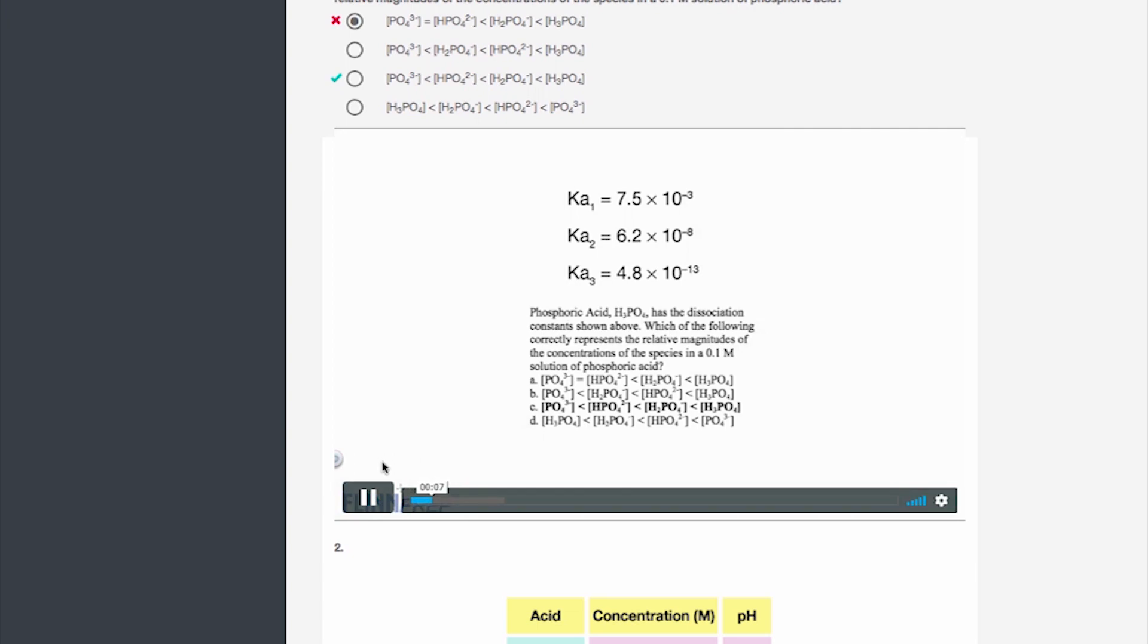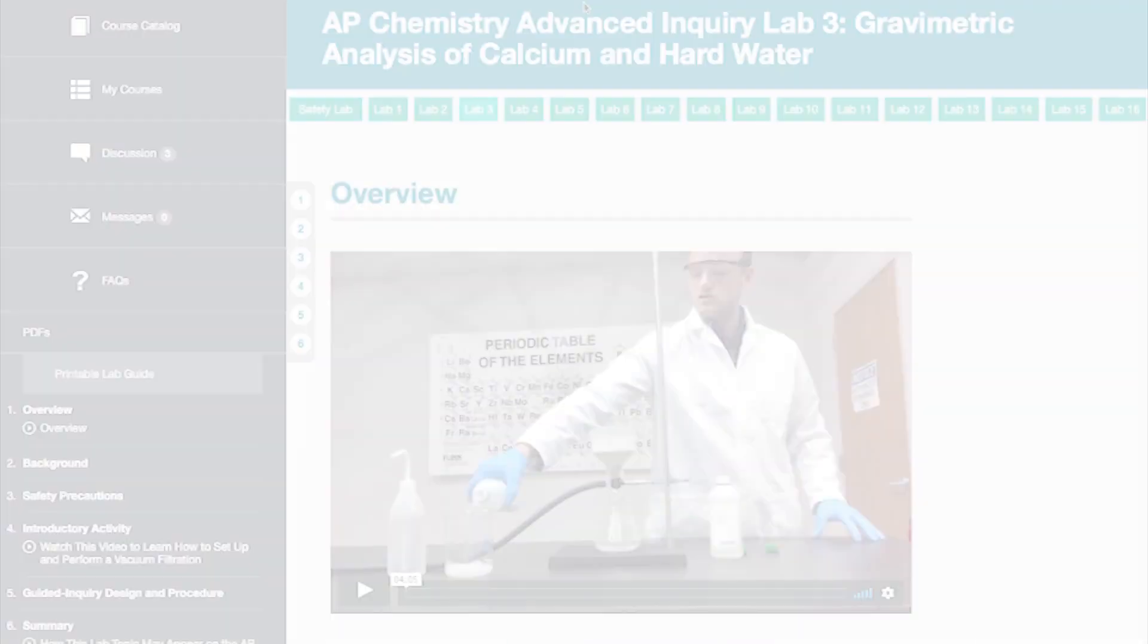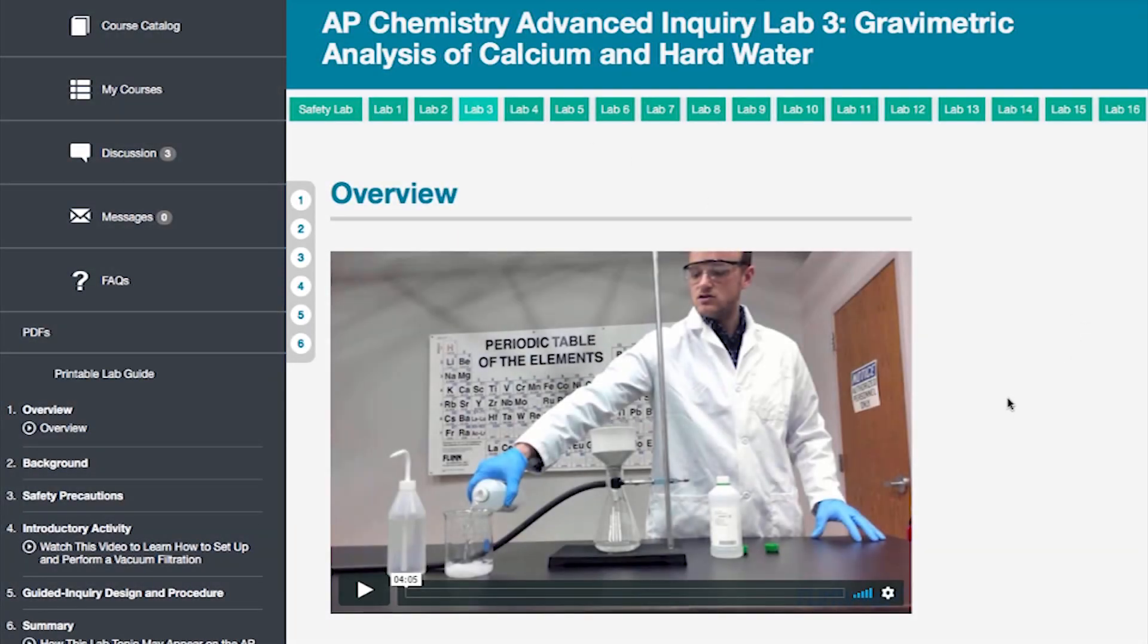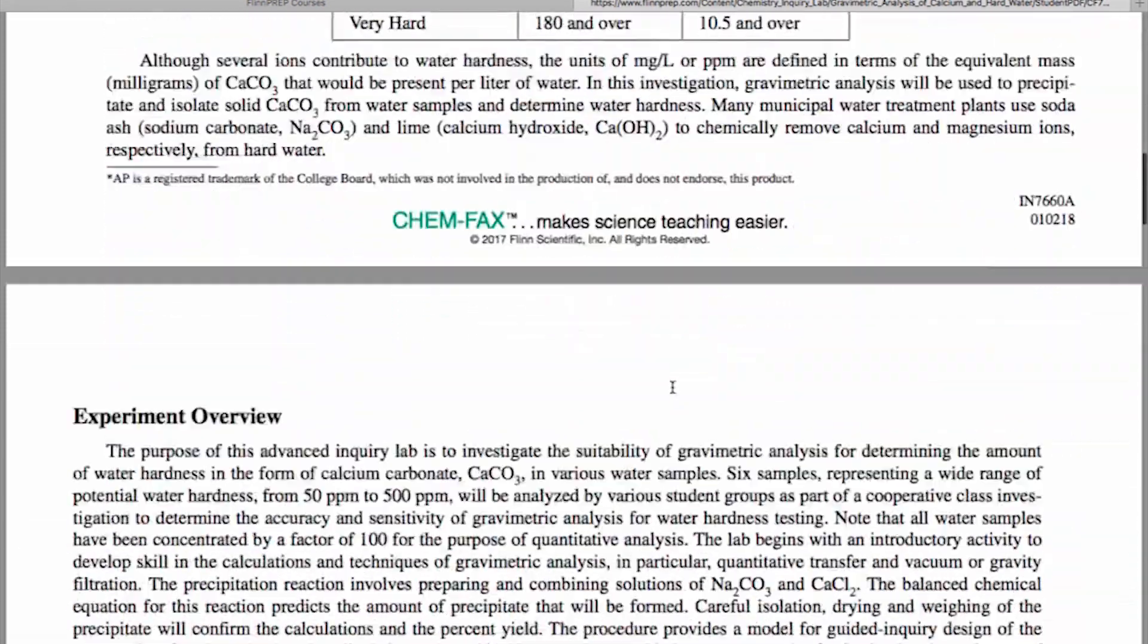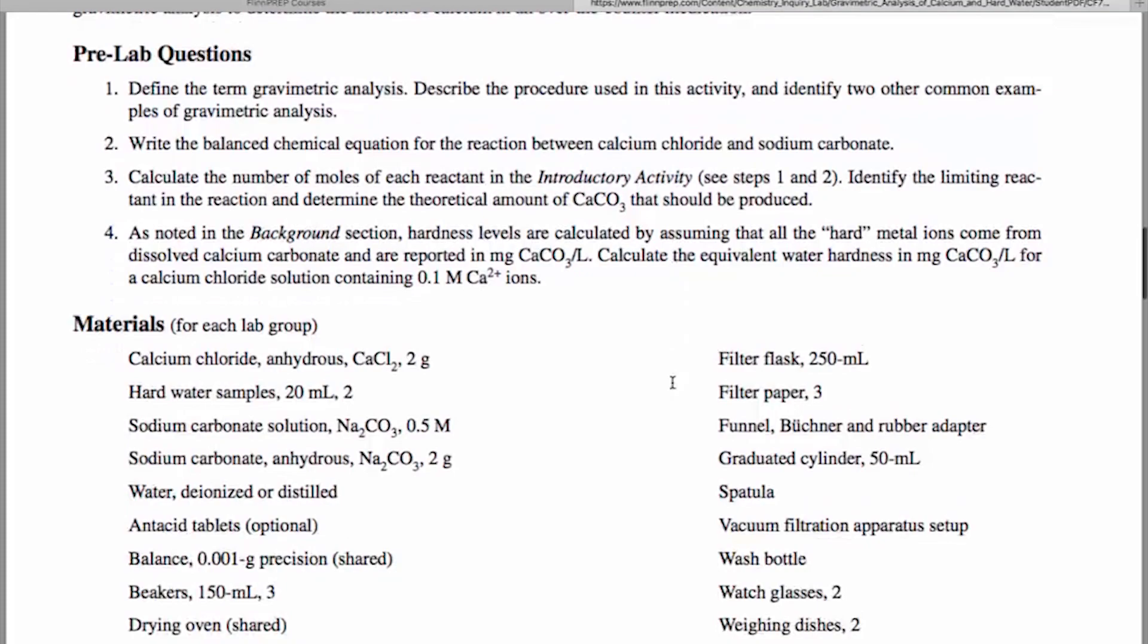This new AP Chemistry lab solution gives you the adaptability to run experiments in multiple ways. You'll have access to digital procedures, downloadable PDFs that are inquiry based, and downloadable PDFs that include a step-by-step procedure for each lab if you prefer to do them that way.